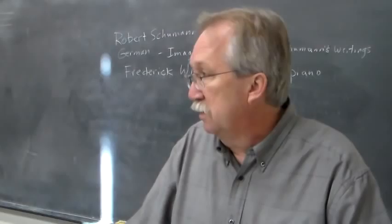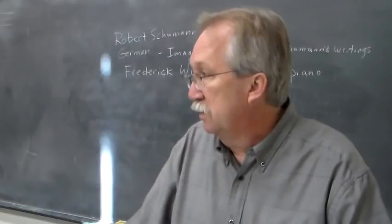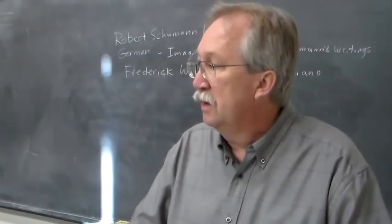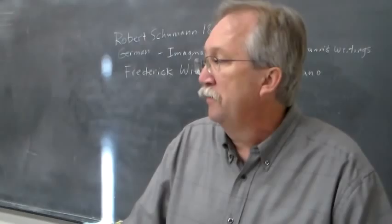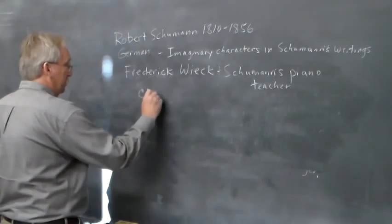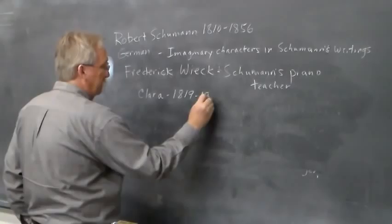Robert Schumann was manic-depressive and started showing signs of illness as a teenager — he had dissociative episodes where he wouldn't remember what had happened for a couple of days, and he drank a lot. Friedrich Wieck was able to block the marriage and didn't allow his daughter to marry Robert. But at the end of the day, Clara turned 21 and they got married.